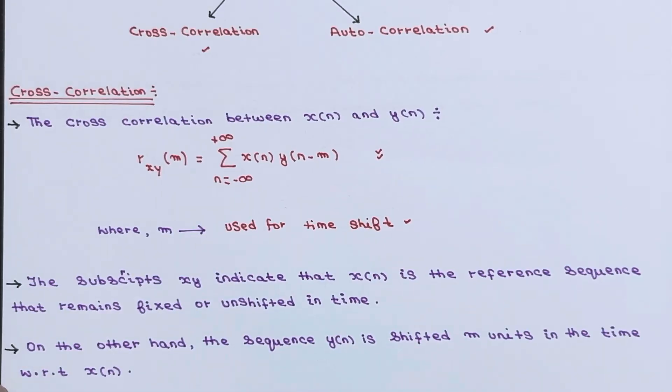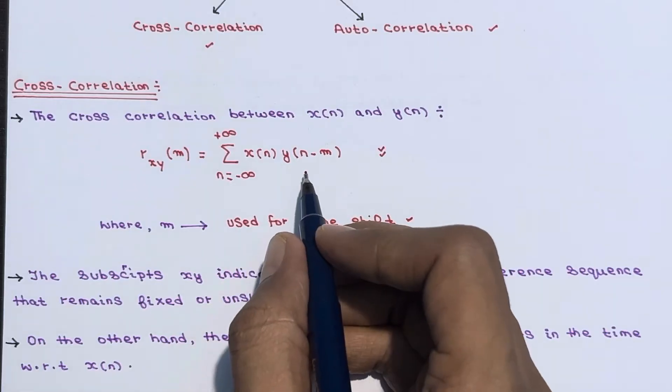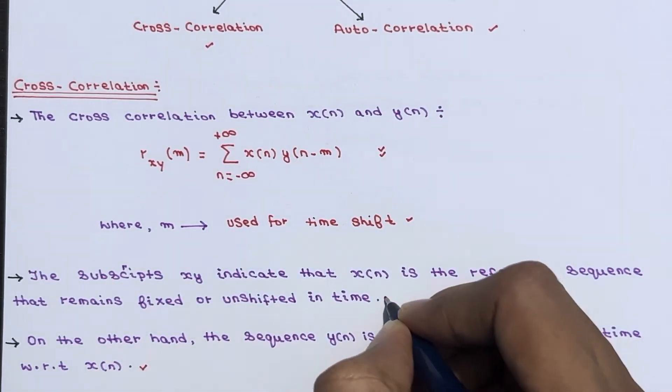And on the other hand, the sequence y of n is shifted m units in the time with respect to x of n. That is why it is y of n minus m. So hope these two points are clear to you.